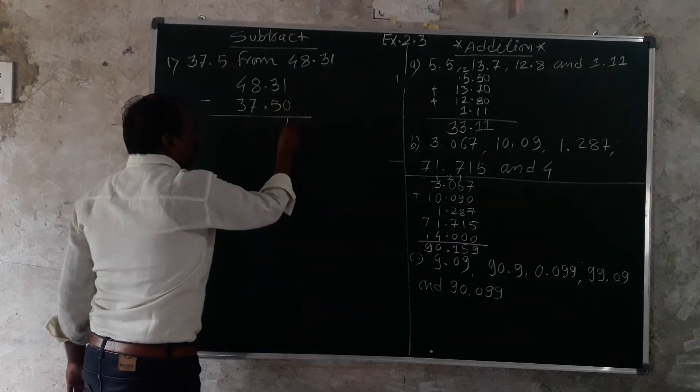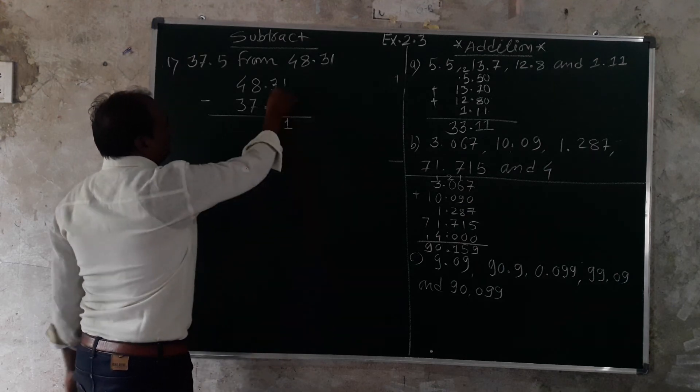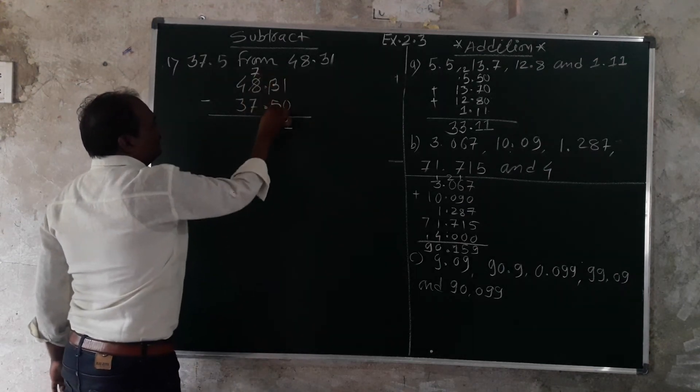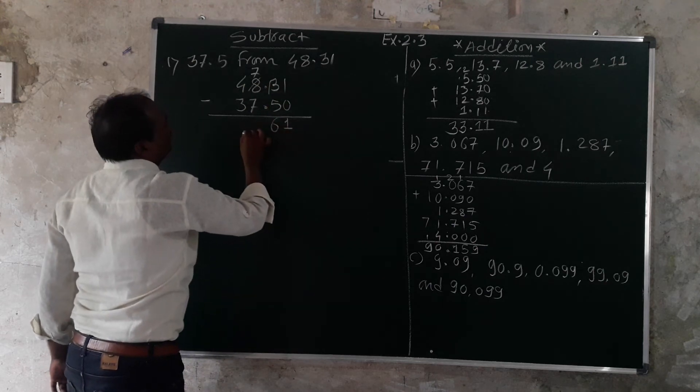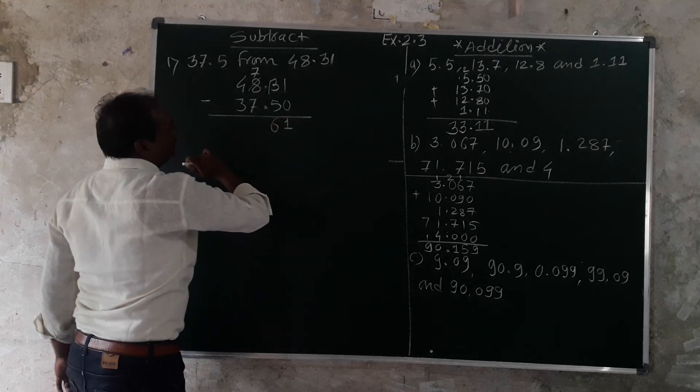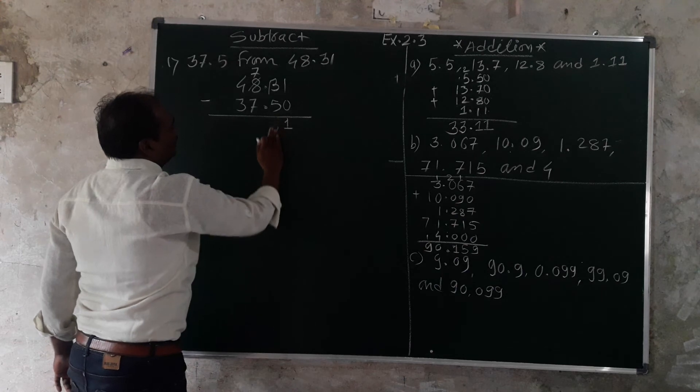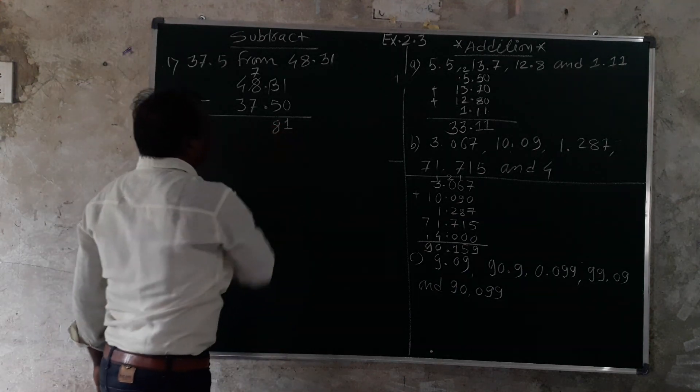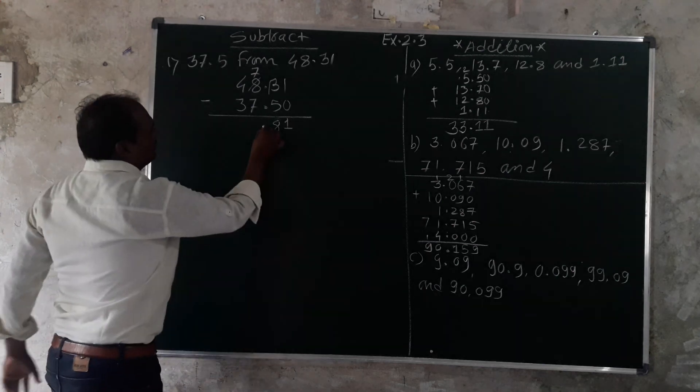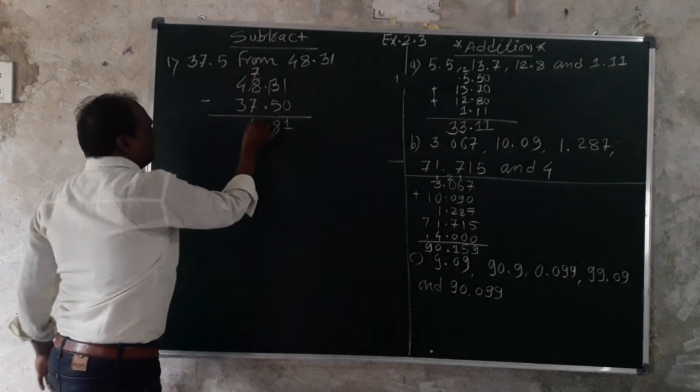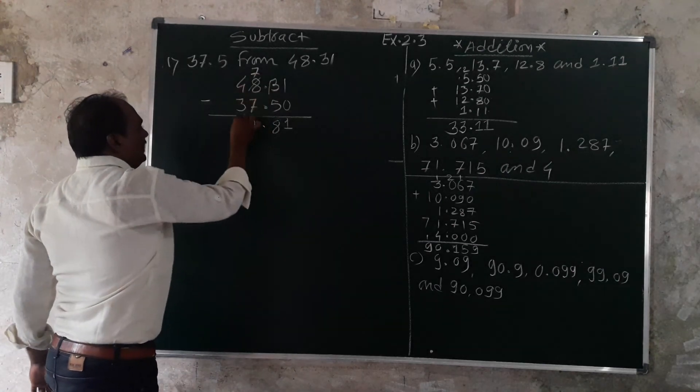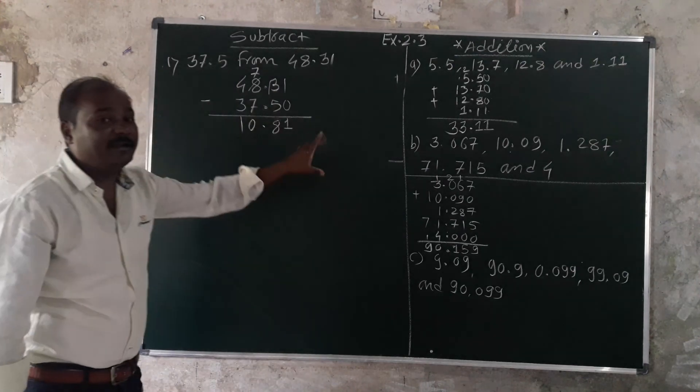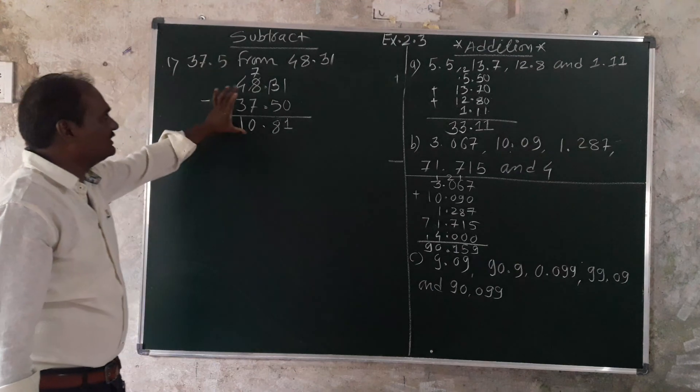1 minus 0 equals 1. 3 minus 5? We need to borrow. 13 minus 5 equals 8. Then we have 7 minus 7 equals 0. Point here. 4 minus 3 equals 1. So this answer is 10.81.